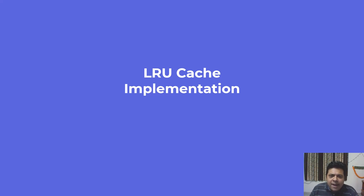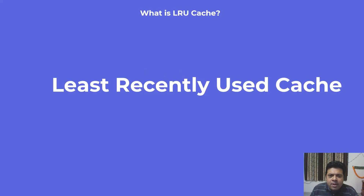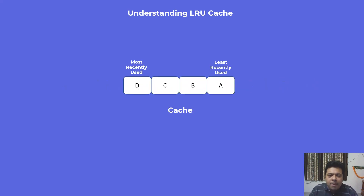Let's understand what an LRU cache is. As the name suggests, it is Least Recently Used cache, and basically what it says is that the least recently used item is removed from the cache. Suppose you have a cache that can at max take four elements and we have already put four elements — A, B, C, and D. The element A on the right hand side is the least recently used element and the element on the left hand side is the most recently used element, in this case element D. Our cache is completely filled up at this point, so there is no space for any new element. If a new element comes in, we have to remove some element from the cache, and the decision to do that is based on the least recently used property.